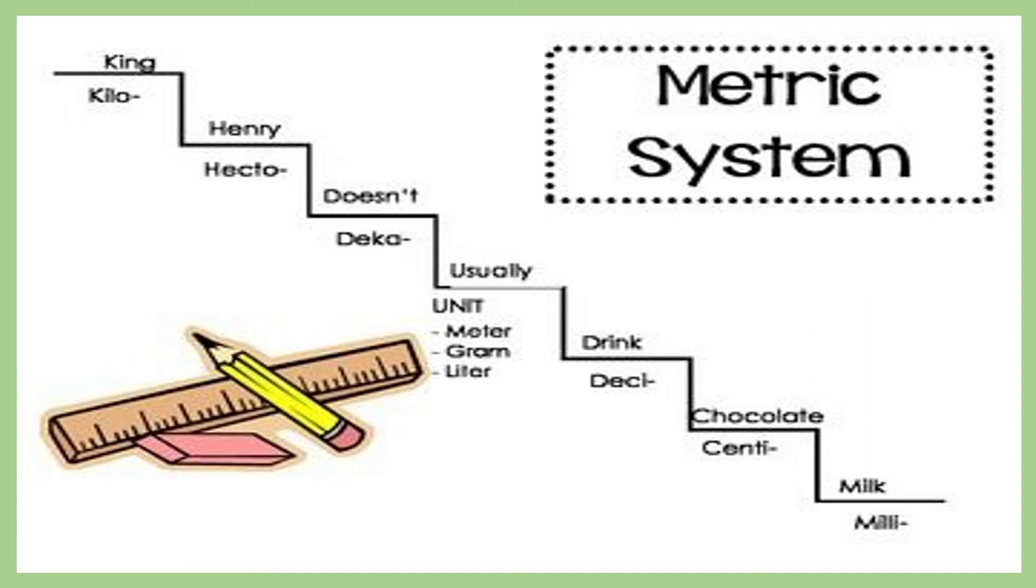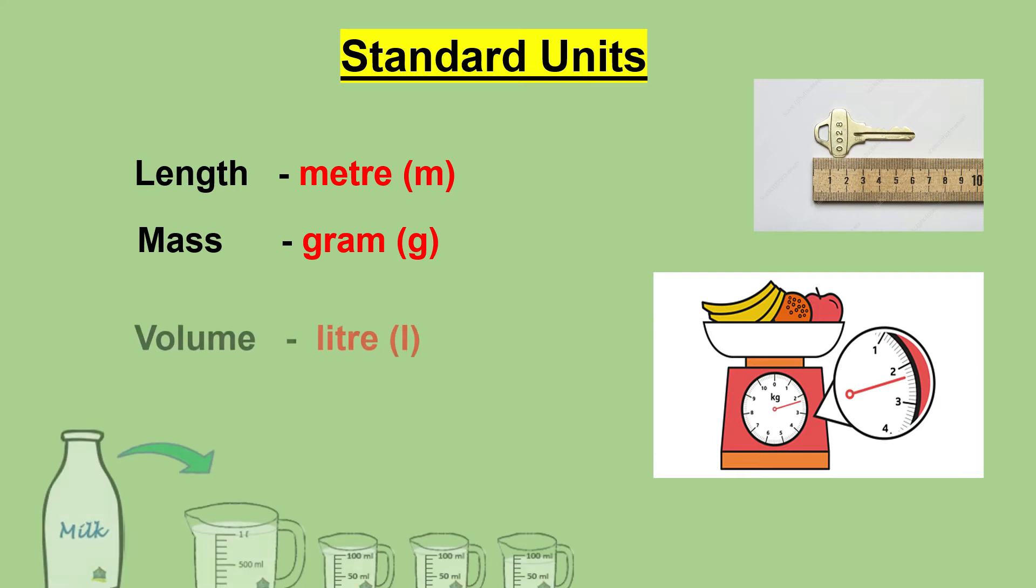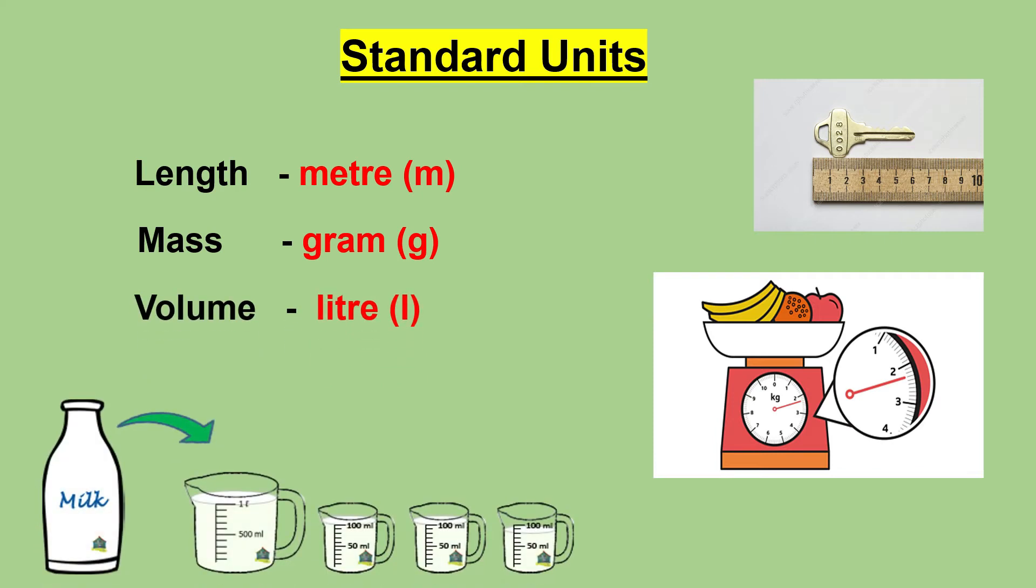Measurement helps us describe the things in the world we live in and to compare them using units. Here we will discuss the metric measures of length, mass, and volume. As we know, the standard units of length, mass, and volume are meter, gram, and liter respectively. The abbreviations of each of these units are, for example, meter as m, gram as g, and liter as l.